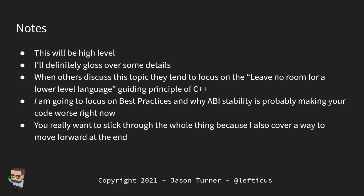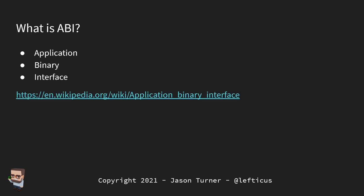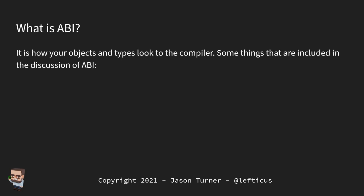You do want to stick through this whole thing — I'm going to cover a way to move forward at the end, which will hopefully be useful. So what is ABI? This is the Application Binary Interface. It's how our objects and types look to the compiler. A compiler has to generate a layout and a protocol for ways that libraries and executables talk to each other.